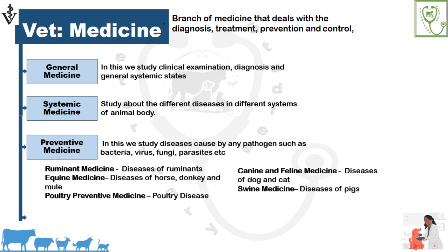Preventive medicine covers diseases caused by pathogens such as bacteria, viruses, fungi, and parasites. It is further divided by species: ruminant medicine — diseases of ruminants; equine medicine — diseases of horses, donkeys, and mules; poultry preventive medicine — poultry diseases; and canine and feline medicine — diseases of dogs and cats.